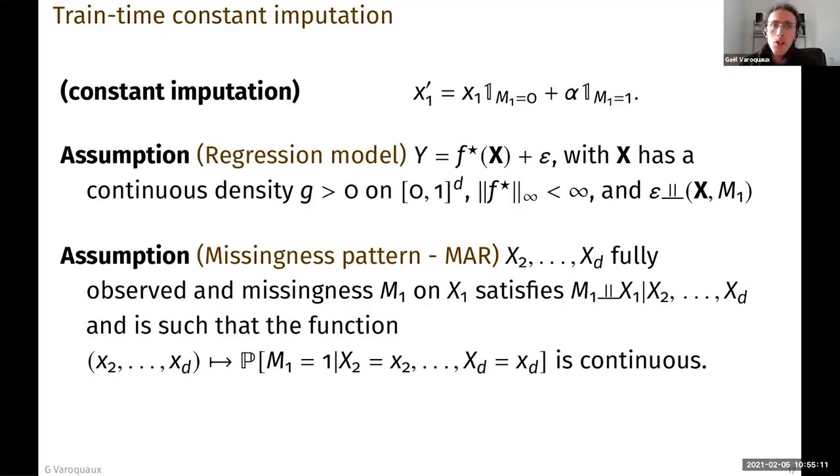And then I need to assume a few things, which are basically some regularity assumptions. First, I'm assuming that my regression, my link between X and Y is sufficiently regular. And those assumptions are here. And then the second, I'm assuming that my missing mechanism is also sufficiently regular. And here we have made the assumption that we have only one variable on which there is missingness. And the important thing is that the function that gives me the probability of missingness is continuous.